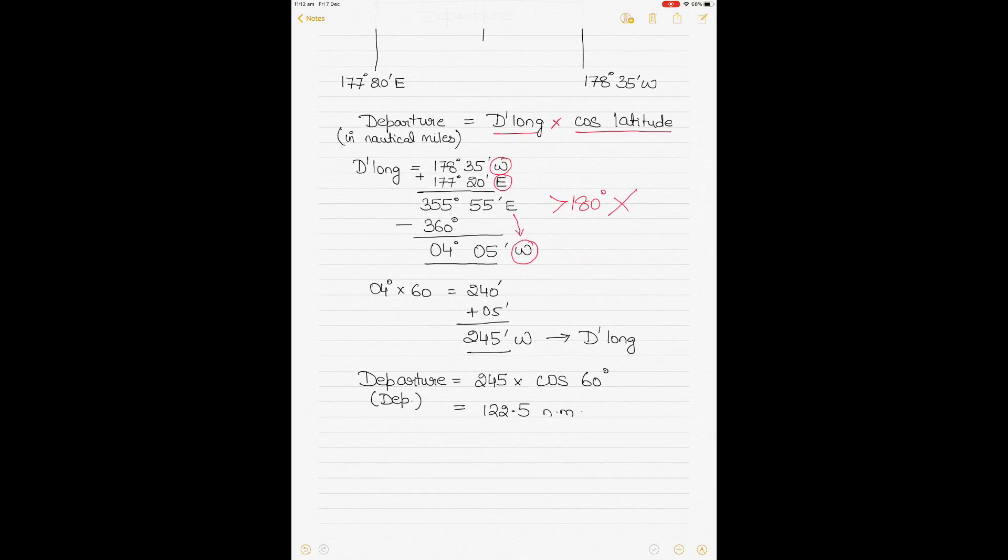So to convert 4 degrees and 5 minutes into minutes, which is a unit of distance, you will take only the degrees, not the minutes, because 1 degree equals 60 minutes. 4 degrees will equal 4 multiplied by 60, which is equal to 240. And then you add the remaining 5 minutes to 240 to get the total of 245 minutes. So 4 degrees and 5 minutes will equal 245 minutes.